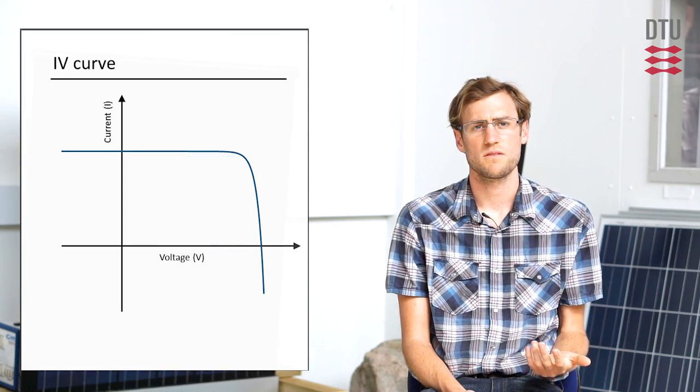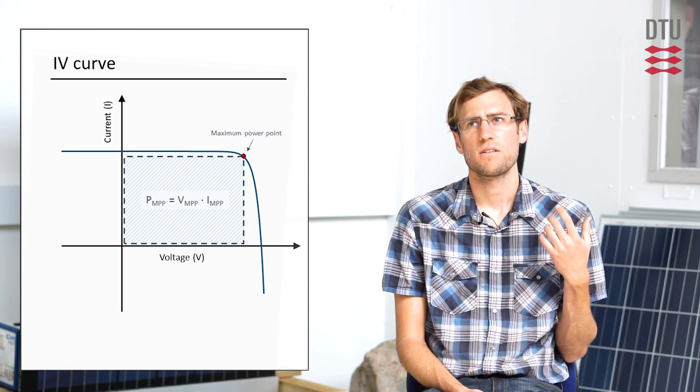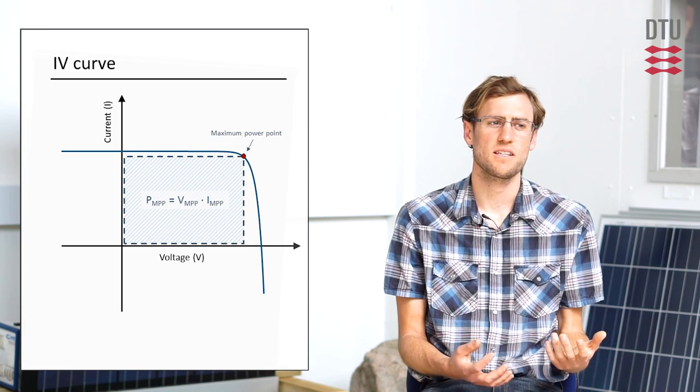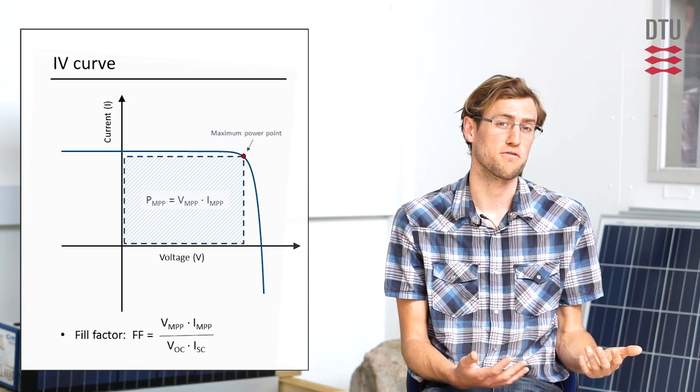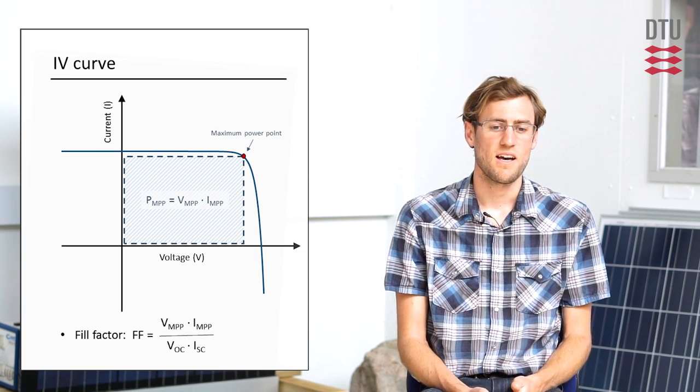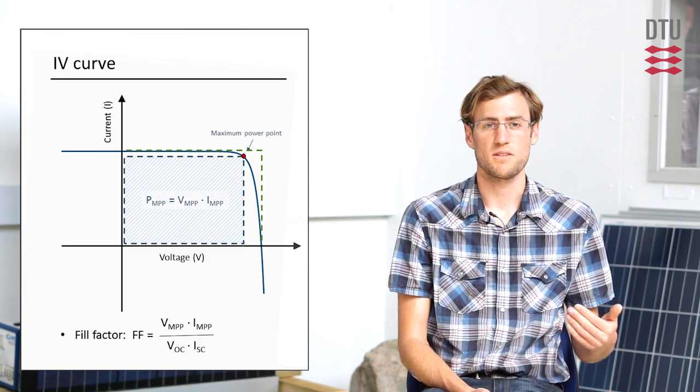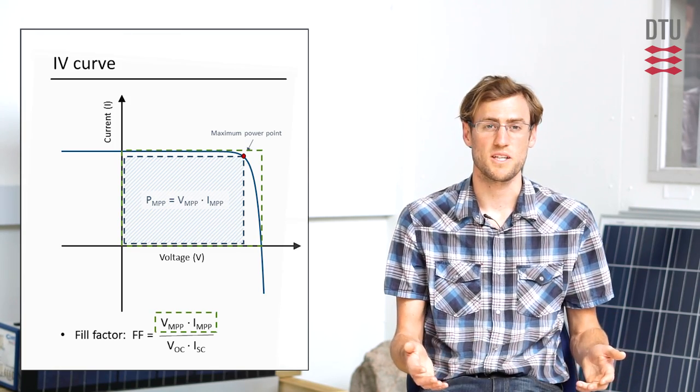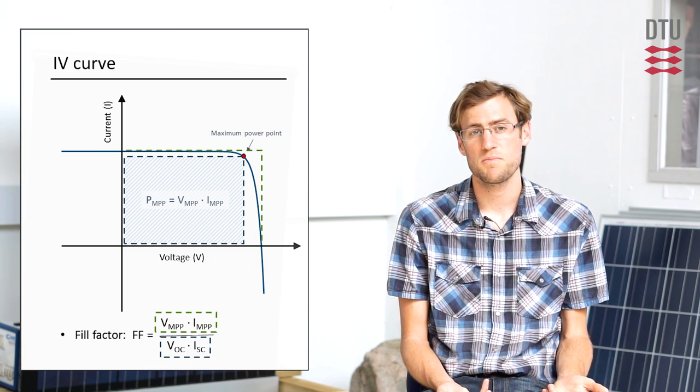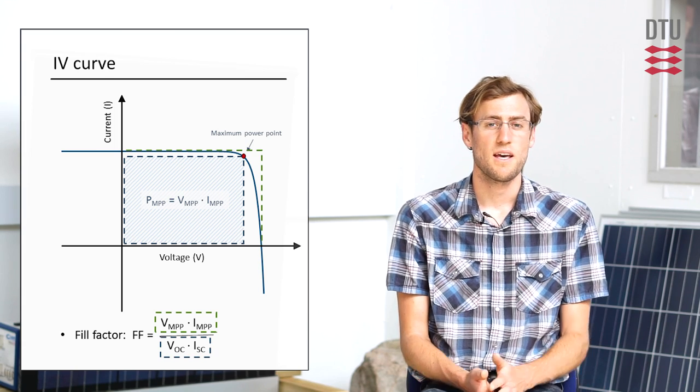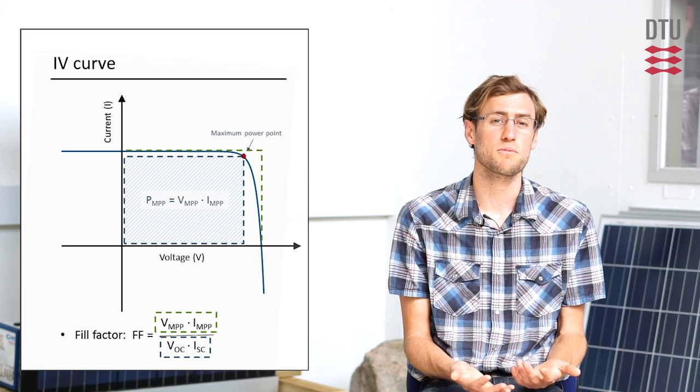And so another useful parameter that we can extract from the IV curve is called the fill factor. The fill factor is essentially an indication of how nice of a square does the IV curve make. And the classic example is how well does a little square fit inside a big square. So the little square being PMP and the bigger square being ISC times VOC. The theoretical maximum for the fill factor is around 0.85 and the theoretical minimum is 0.25. 0.25 would be a pure resistive load.